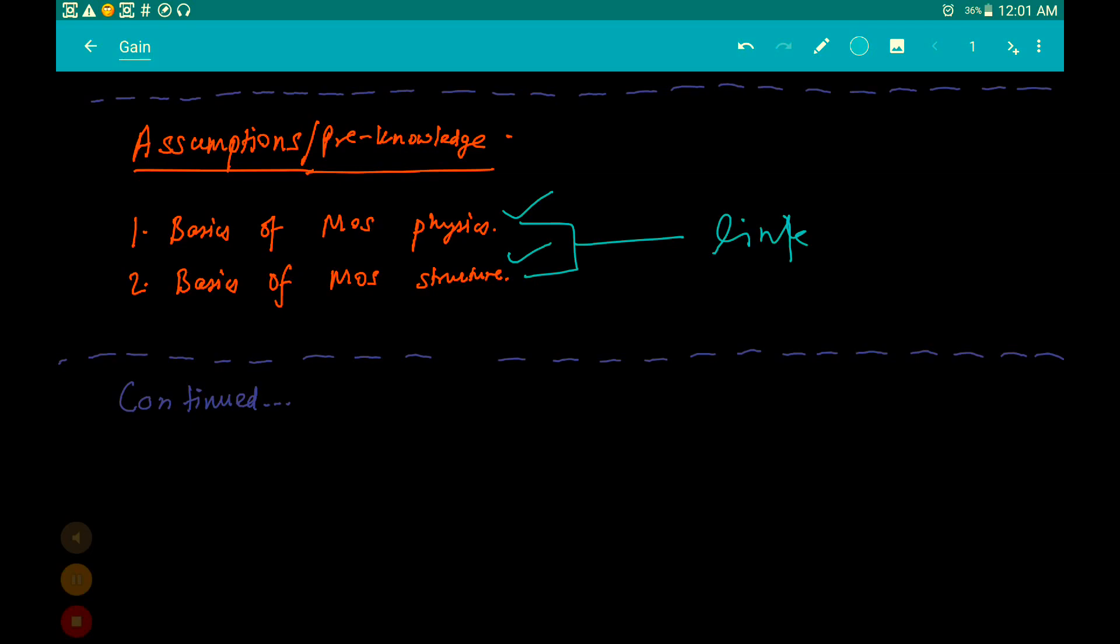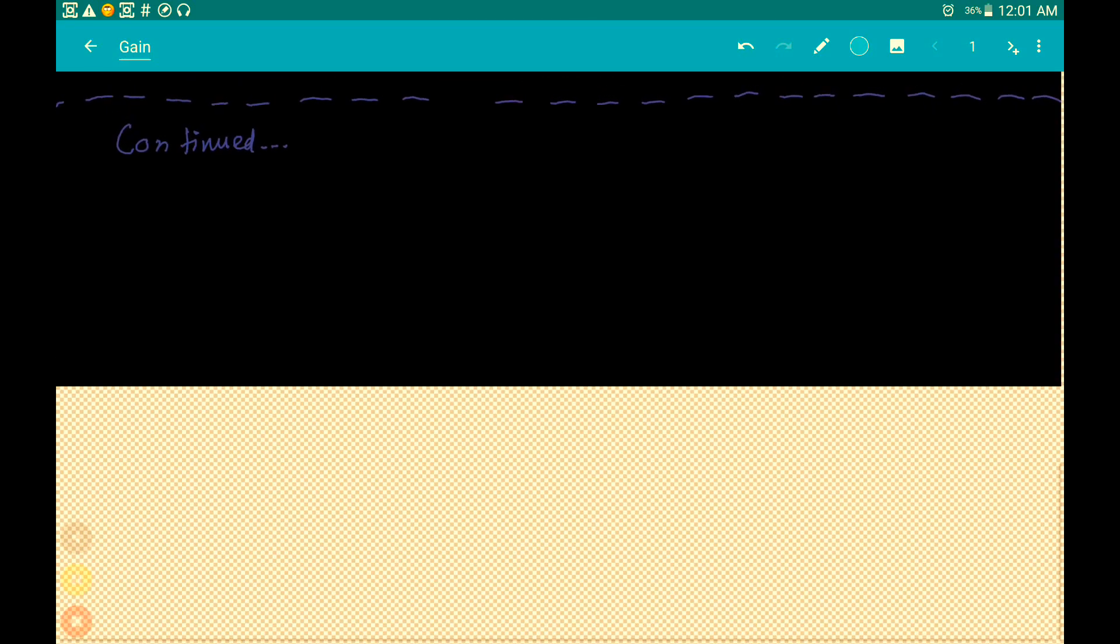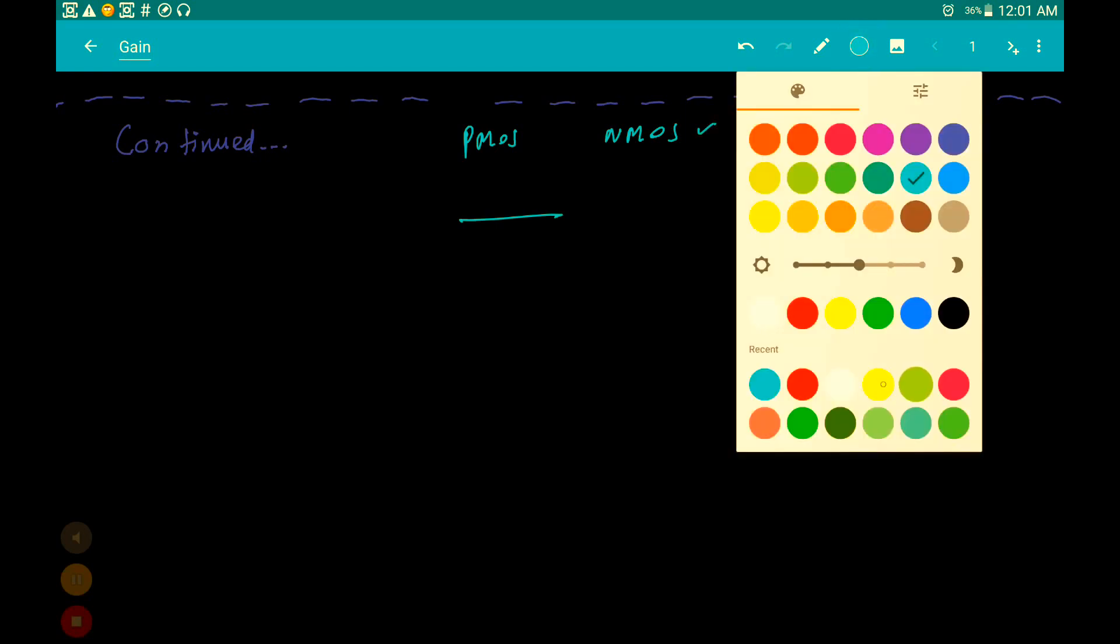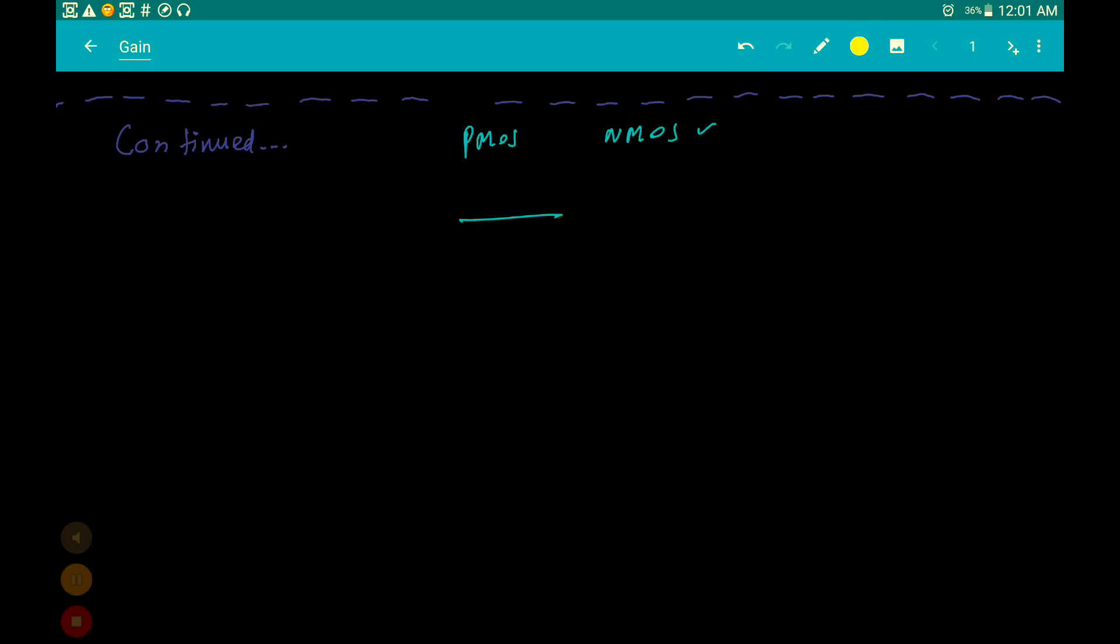Let's move on. Let's draw our circuit. We know that MOSFETs are of two types: PMOS and NMOS. In this case, we're considering an NMOS. Let's go ahead and draw our circuit. We have VDD over here, which is connected to our resistance.